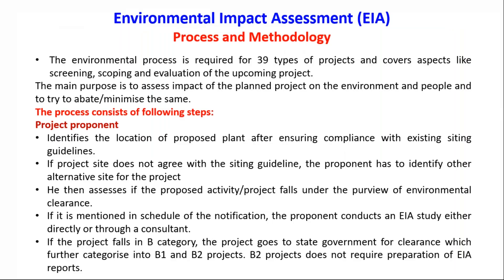All the flowchart points are discussed in these slides. The EIA process is required for 39 types of projects and covers aspects like screening, scoping, evaluation, and upcoming projects — which we have already discussed in the environmental clearance part. The main purpose is to assess the impact of a planned project on the environment and people.